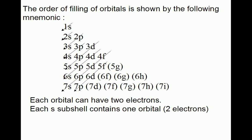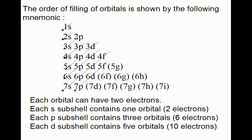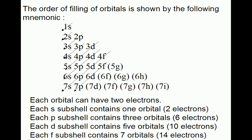Each s subshell contains 1 orbital, giving 2 electrons. Each p subshell contains 3 orbitals, or 6 electrons. Each d subshell contains 5 orbitals, or 10 electrons. Each f subshell contains 7 orbitals, or 14 electrons.